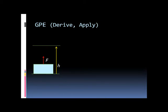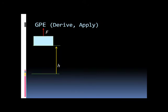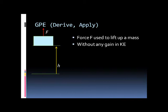The last thing we need to know is how to derive and apply Gravitational Potential Energy. If we lift a block with force F through a certain height without any gain in kinetic energy, all the work done by this force goes into gravitational potential energy. Since work done equals force times distance, gravitational potential energy equals force times distance.